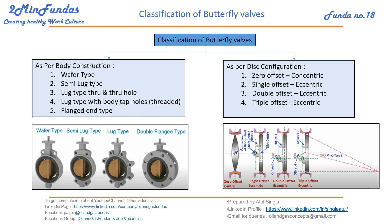The wafer type has a very simple configuration — very thin, no flanges, only the disc moving 90 degrees in the valve body. The semi-lug type has lugs here, with the disc again moving 90 degrees inside the valve body. The lug type has lugs all around.